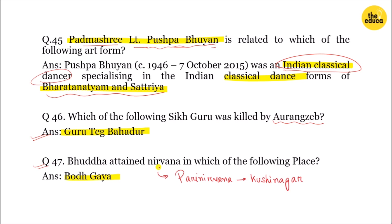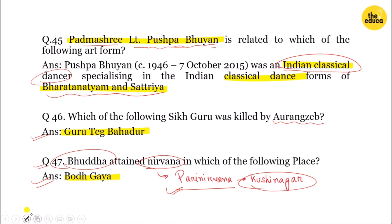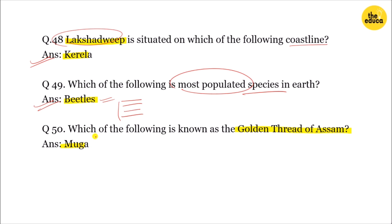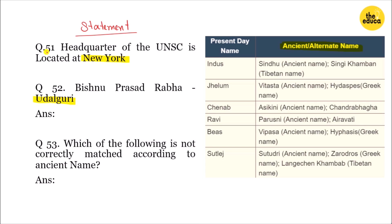The next question is about Buddha's nirvana. Following that, Lakshadweep is situated on which coastline? The most populated species on Earth are insects. Which of the following is known as the golden trade of Assam? The UNSC headquarters is in New York.